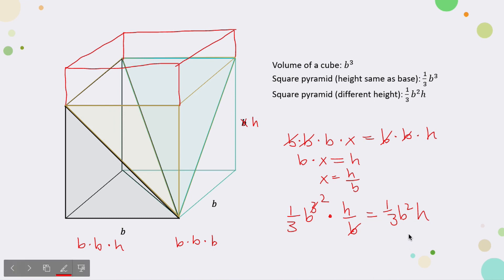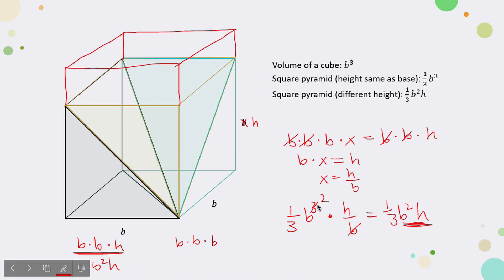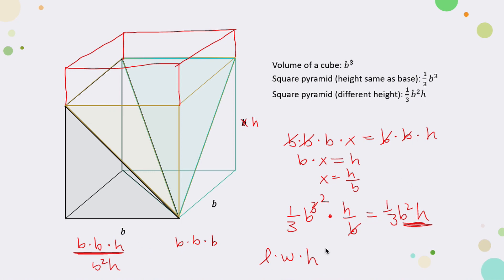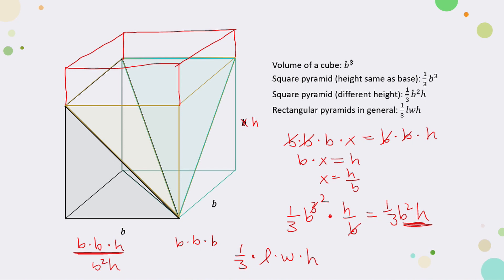You can see that B² times H is basically B×B×H, which is also equal to B²H. This can apply to all sorts of rectangular prisms, which means it applies to all sorts of rectangular pyramids. So if we have a rectangular prism with dimensions L×W×H, then the formula for the pyramid will be 1/3 of that. The formula for rectangular pyramids in general is 1/3 times L times W times H.